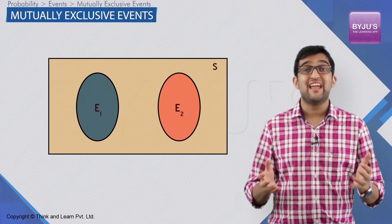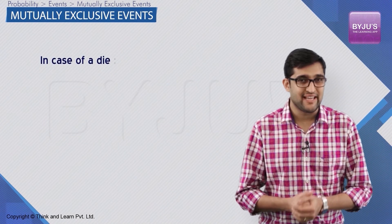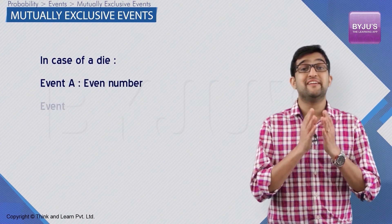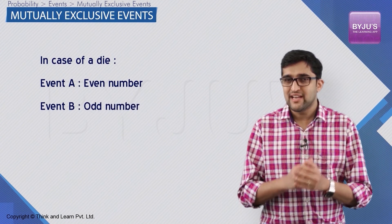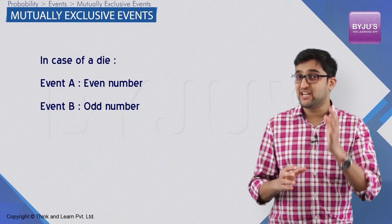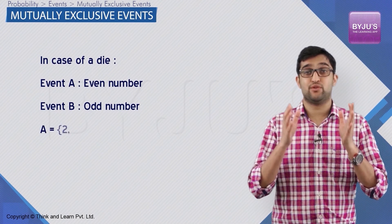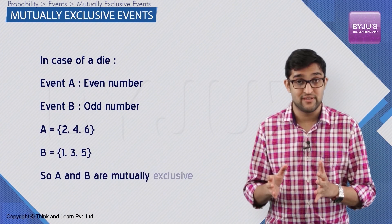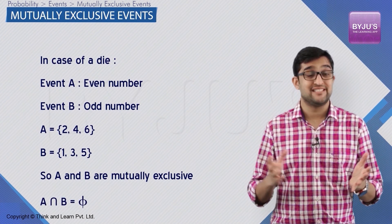In the case of rolling a die, event A is described as appearance of an even number, and event B is described as appearance of an odd number. Clearly, if one says A has occurred, we can immediately conclude that B has not occurred. So, A the set of 2, 4, 6 and B the set of 1, 3, 5 are mutually exclusive, and A intersection B is null set.